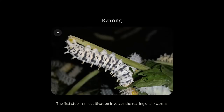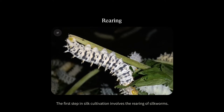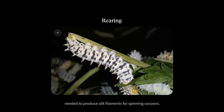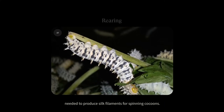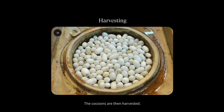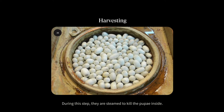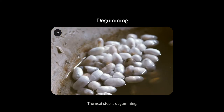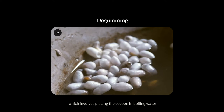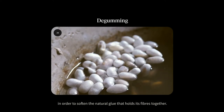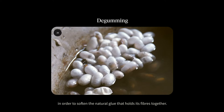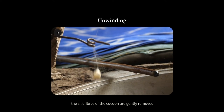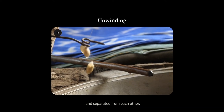The first step in silk cultivation involves the rearing of silkworms. This is done by ensuring they have the right habitat and diet needed to produce silk filaments for spinning cocoons. The cocoons are then harvested. During this step, they are steamed to kill the pupae inside. The next step is degumming, which involves placing the cocoon in boiling water in order to soften the natural glue that holds its fibers together. Finally, at the unwinding stage, the silk fibers of the cocoon are gently removed and separated from each other.